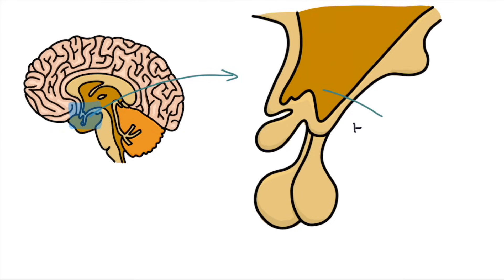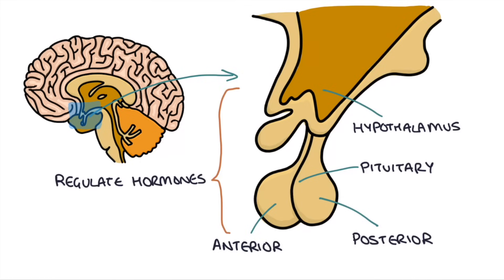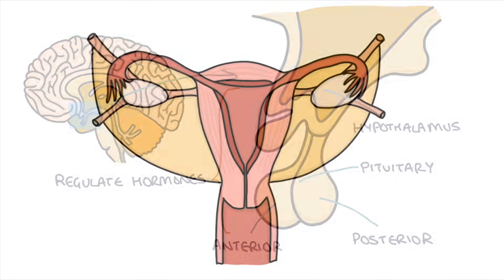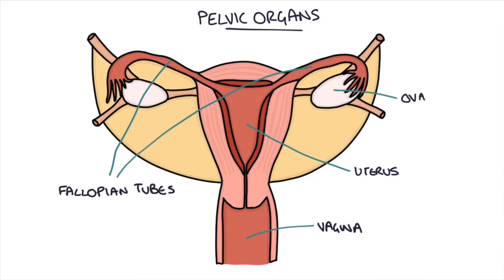You need to be aware of some key structures in the body that release the hormones. Firstly, in the middle of the brain you have the hypothalamus and the pituitary gland. The pituitary is split into two parts: the anterior part at the front and the posterior part at the back, and these are responsible for regulating a large number of hormones in the body. Then you have the pelvic organs: the vagina, the uterus where the babies grow, the fallopian tubes, and the ovaries.